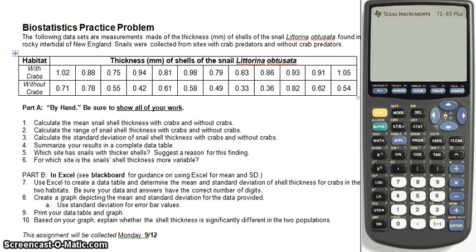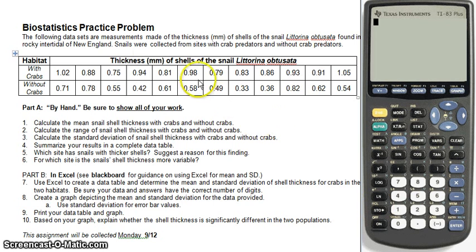This is the data that you guys received in class. I'm going to use the same data in the TI-83 to calculate means and standard deviation. We're going to enter in the thickness of shells of the snail — we've got units of millimeters. We've got the thickness of 12 shells from a habitat with crabs and 12 from a habitat without crabs.